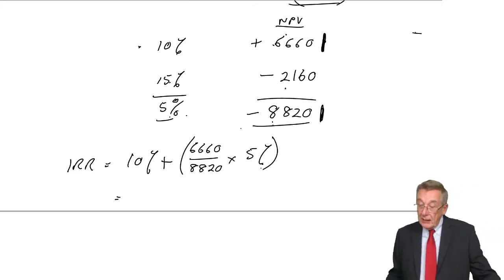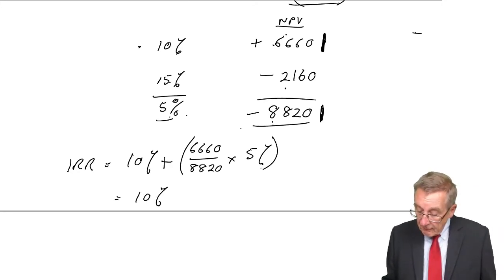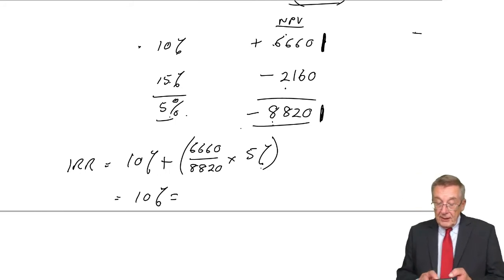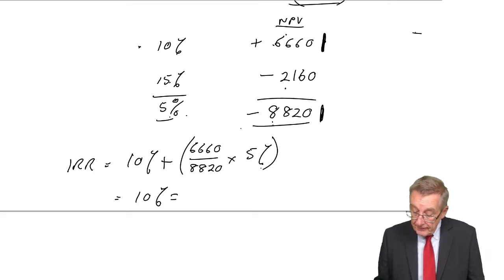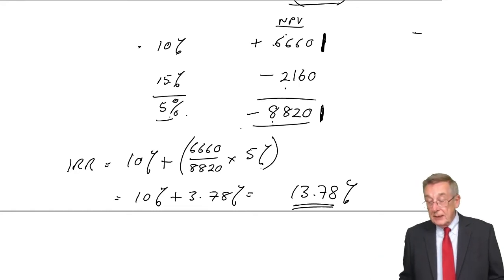I want a fall of 6,660. We know 8,820 is five percent. So we take that proportion of five percent. 6,660 divided by 8,820 times five is 3.78%.